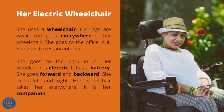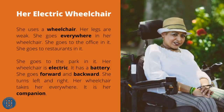Her Electric Wheelchair. She uses a wheelchair — her legs are weak. She goes everywhere in her wheelchair: to the office, to restaurants, and to the park. Her wheelchair is electric and has a battery. She goes forward and backward, and turns left and right. Her wheelchair takes her everywhere. It is her companion.